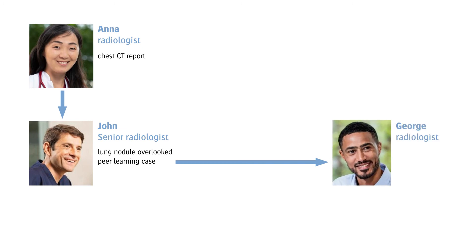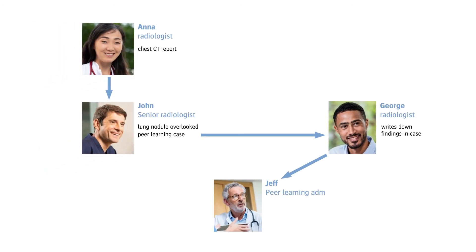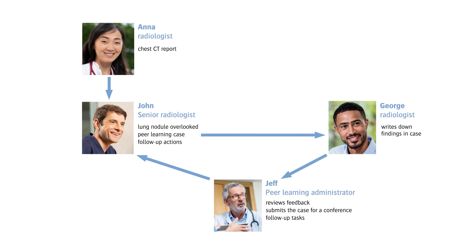In this case, George. George writes down his findings and sends them for review to Jeff, the peer learning administrator. Jeff reviews George's feedback and thinks it's an interesting case for a peer learning conference. The conference results in a number of follow-up actions. A follow-up task is created for John, as Anna's supervisor, who carries out the follow-up actions and closes the case.